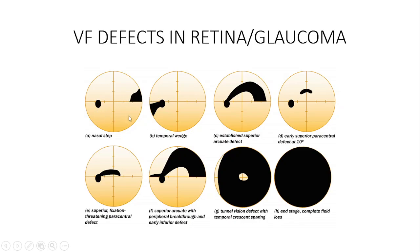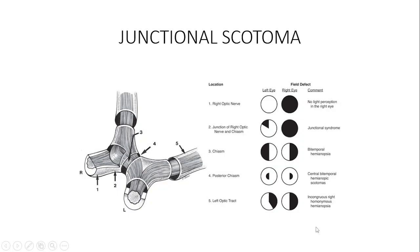The scotoma starts small, then becomes bigger with continuous widening, until you have what we call tunnel vision — like you are looking through a tunnel, seeing only the central portion. In polymeric glaucoma, the eye becomes completely blind, giving complete anopia. This is about retinal problems where fibers don't respect the vertical nor the horizontal. This is the visual field you can see in glaucoma patients.